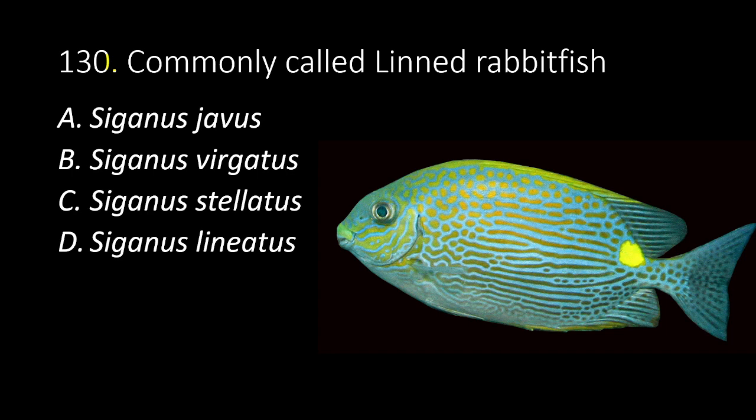131. Commonly called lined rabbit fish. A. Siganus javus. B. Siganus virgatus. C. Siganus stellatus. D. Siganus lineatus. The answer is D, Siganus lineatus.